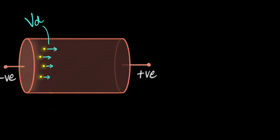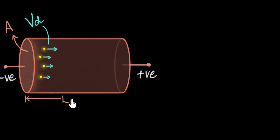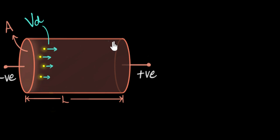Maybe it also depends on the dimensions of the conductor. So let's say the cross-sectional area is A and the length is L. Another thing that might matter is how many electrons there are in the first place in this conductor. If there are a lot of electrons, then in that one second I would see a lot of electrons going by and there'll be higher current. So that also matters.